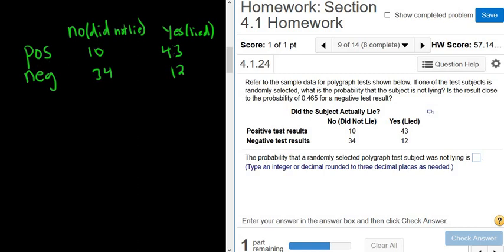And there are 43 people that are positive and did lie. So to figure out all the no's, you would just add up these numbers, 10 and 34. To figure out all the negative results, you would just add up the 34 and the 12. You would add up going across.